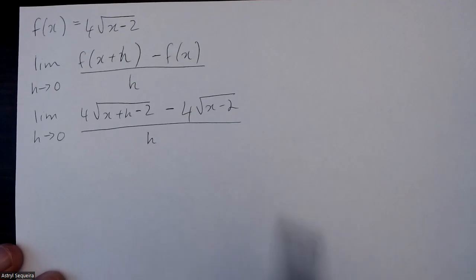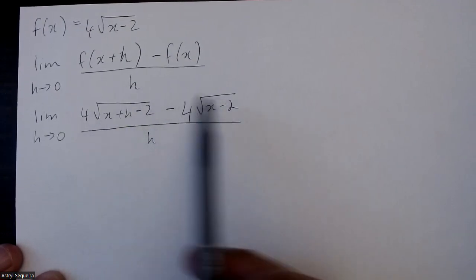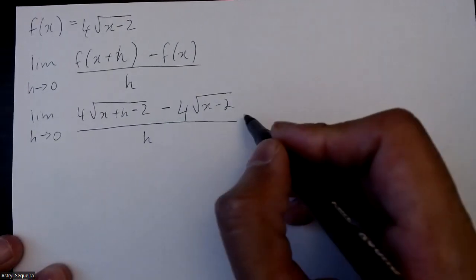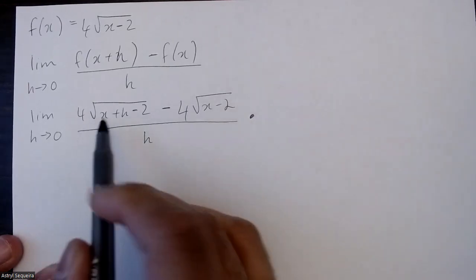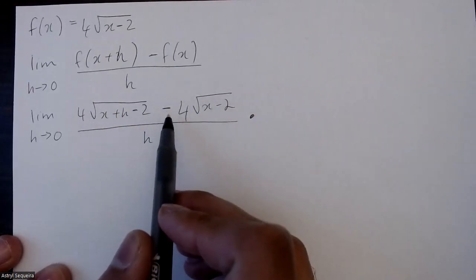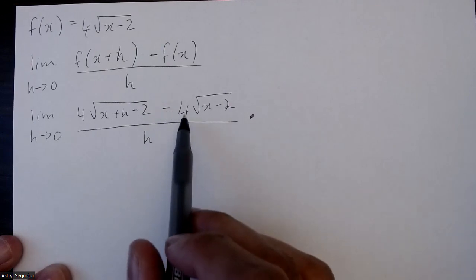So now we want to simplify this, and anytime you have a radical equation you need to rationalize to simplify it. So I'm going to multiply the top and the bottom by the same thing as the top, but I'm going to change the sign in the middle to a plus.